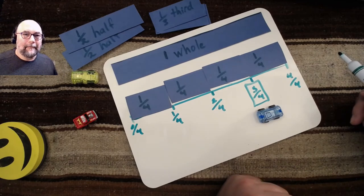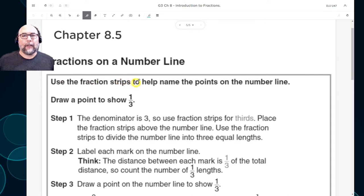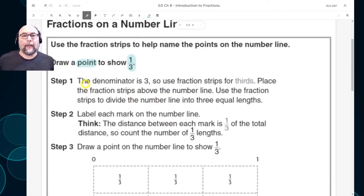Let's look at this in the workbook. Use the fraction strips to help name the points on the number line. Draw a point to show one third. So they're going to give us a number line. And they're going to ask us to draw a point showing one third. Step one. The denominator is three. So use the fraction strips for thirds. Place the fraction strips above the number line. Use the fraction strips to divide the number line into three equal lengths.